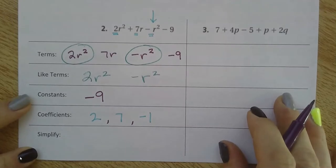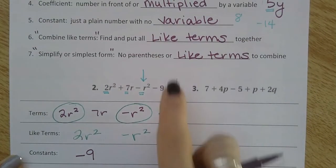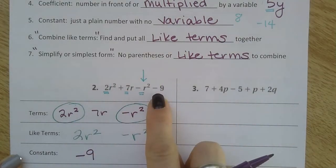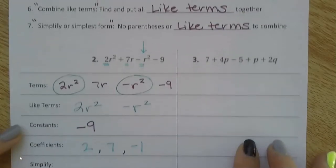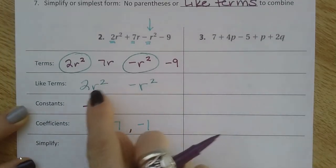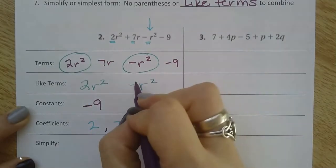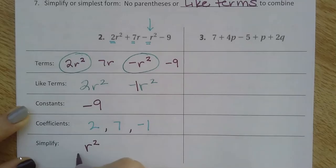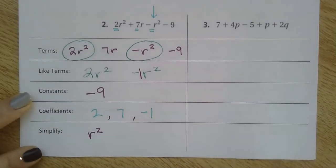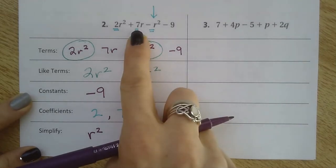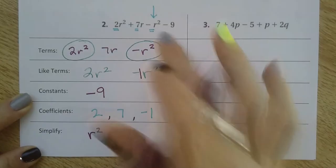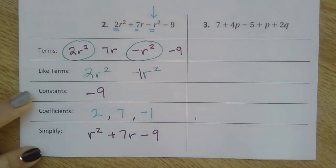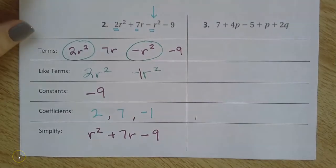If they ask me to simplify it, our definition of simplify is no parentheses - that's not an issue here - and no like terms left to combine. Let me find those like terms. The 2r squared minus 1r squared - remember that's an invisible 1 - leaves me with 1r squared, and I don't need to write the 1. Then I still have 7r and negative 9. Now it's written in simplest form because I don't have any more like terms to combine.